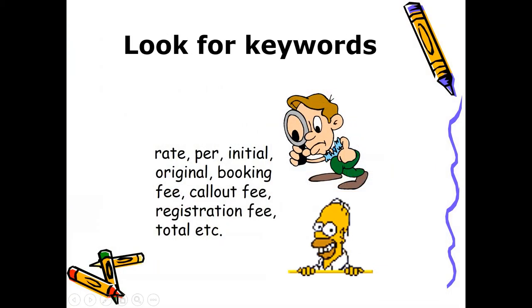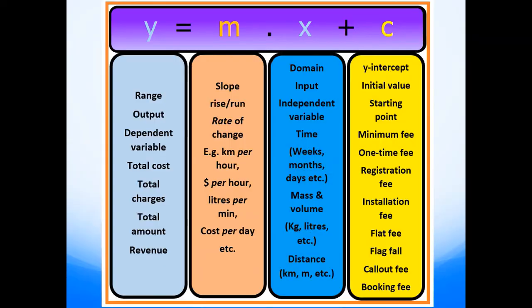What you need to look for in a word problem is the keywords. I've got a list of keywords you can use for reference — the slope-intercept form of the linear function, y = mx + c, is color coded so it's easy to follow. I would suggest you pause the video and take note of this slide because it's really important and will help you in the actual assessment to decipher information given in context.